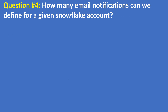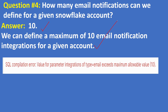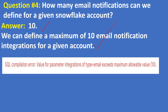Question four: how many email notifications can we define for a given Snowflake account? The answer is 10. We can define a maximum of 10 email notification integrations for a given account. If you try to create more than 10, the error is: SQL compilation error — value for parameter integrations of type email exceeds maximum allowable value of 10.